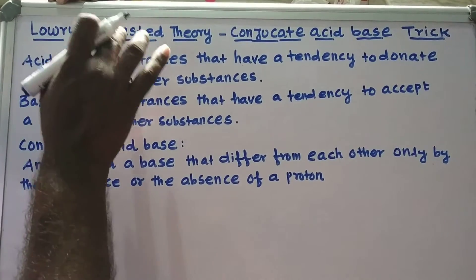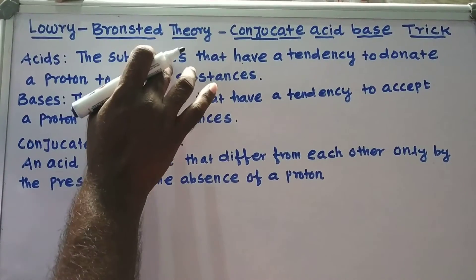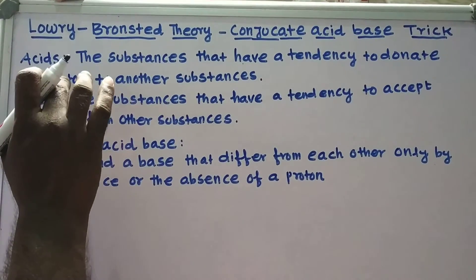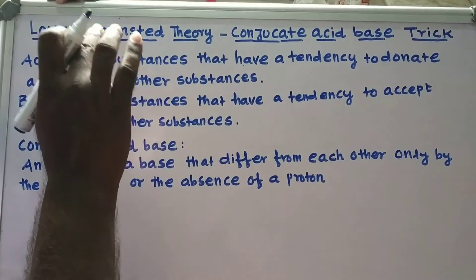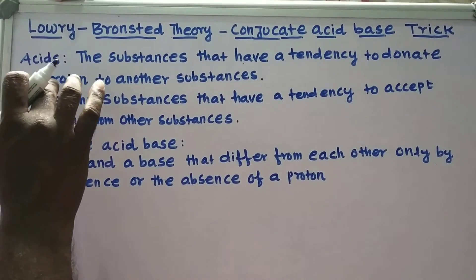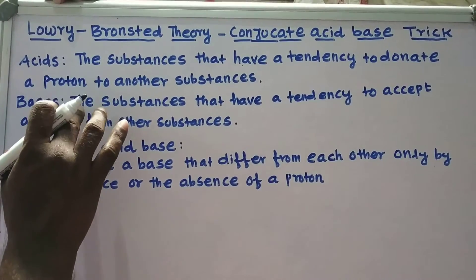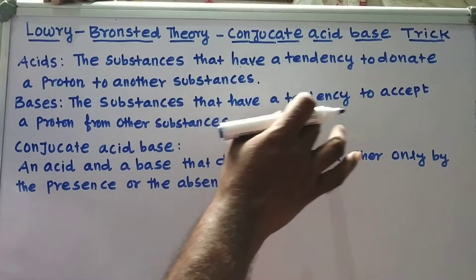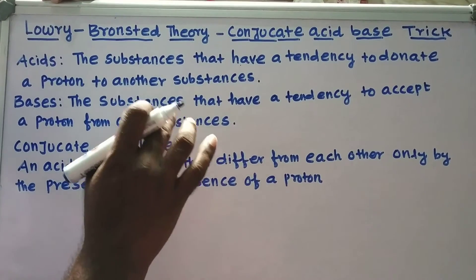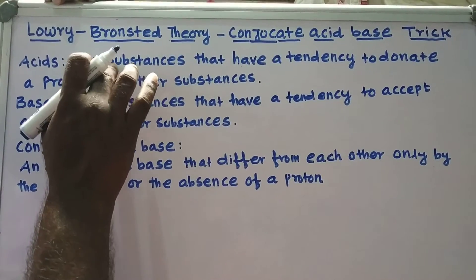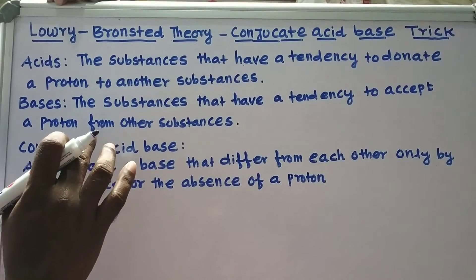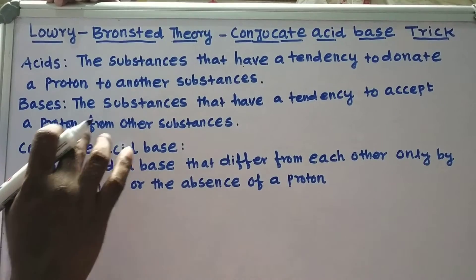According to Brønsted-Lowry theory, the substances that have a tendency to donate a proton to other substances are called acids. Now we are going to see bases. According to Brønsted-Lowry theory, the substances that have a tendency to accept a proton from other substances are called bases. Simply said, acid is the donor of protons and base is the acceptor of protons.